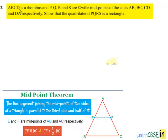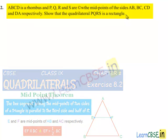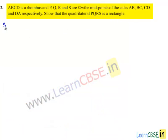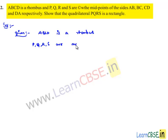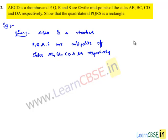Moving on to the second question: ABCD is a rhombus and PQRS are the midpoints of the sides AB, BC, CD and DA respectively. Show that quadrilateral PQRS is a rectangle. Given that ABCD is a rhombus in which PQRS are midpoints of sides AB, BC, CD and DA respectively. Let us draw a figure regarding it.